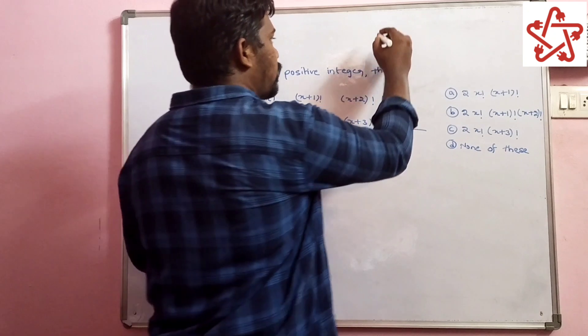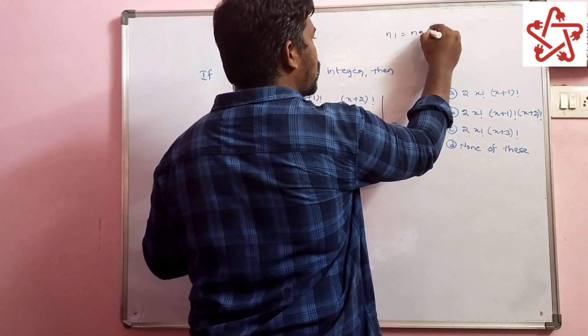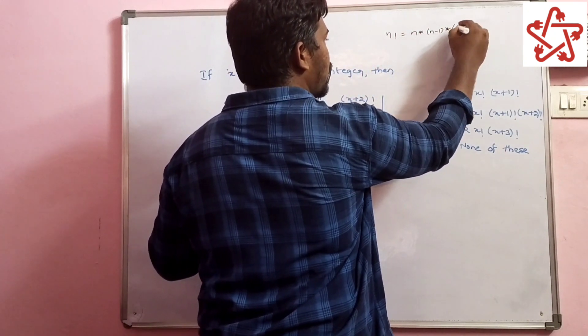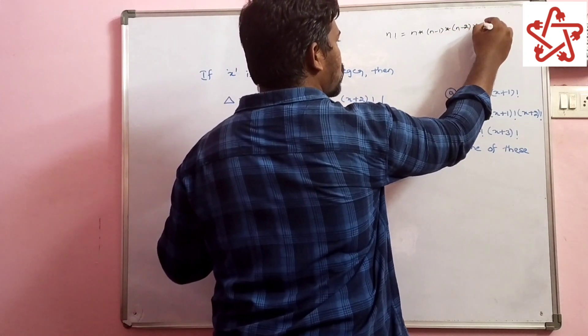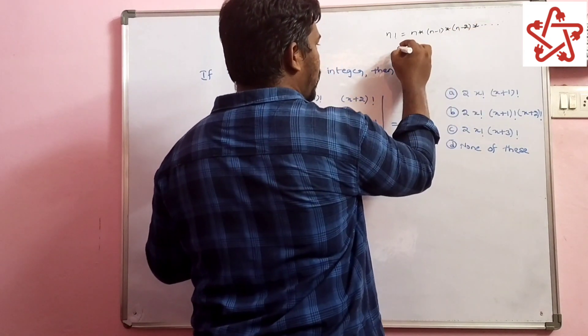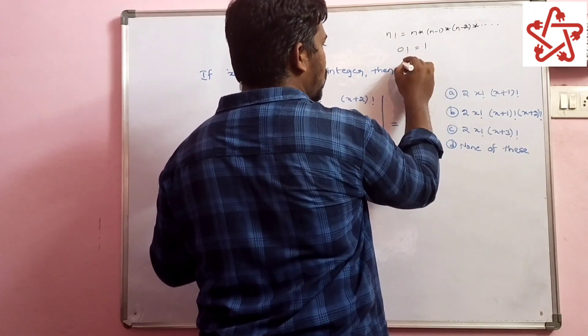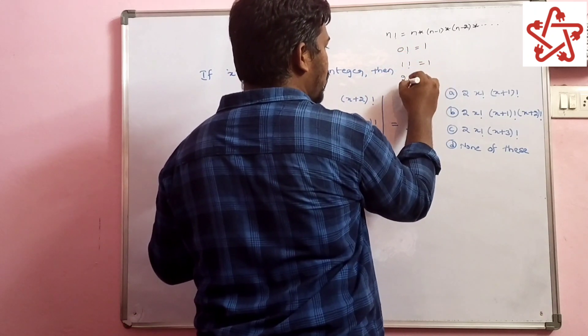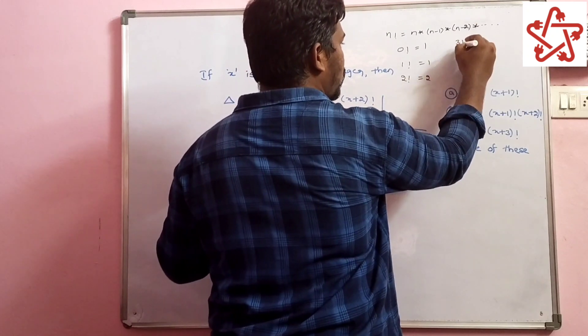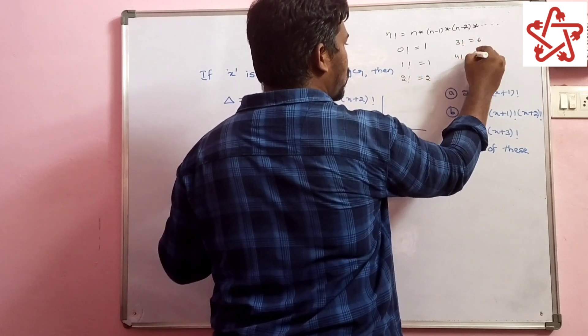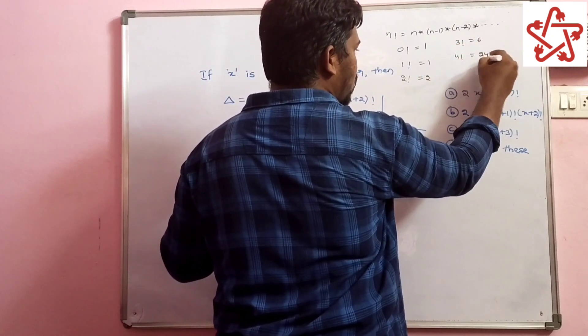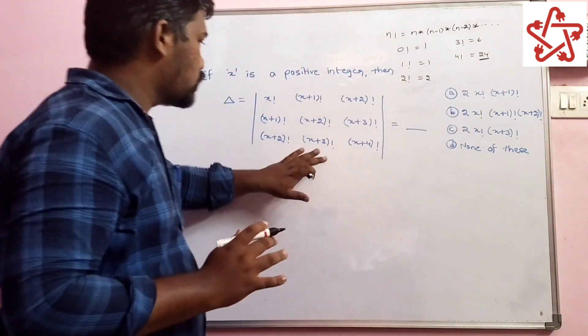For finding n factorial, we will do n into n-1 into n-2 and so on. For example, 0 factorial is 1, 1 factorial is 1, 2 factorial is 2, 3 factorial is 6, 4 factorial is 24. This is just enough to solve this problem.